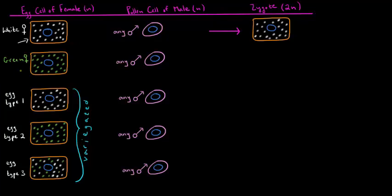In the second row, we have an egg cell from a branch that had only green leaves. Again, no matter what we cross it with — whether the pollen came from a white leaf, a variegated leaf, or a green leaf — we always get the same result: a plant with only green leaves.